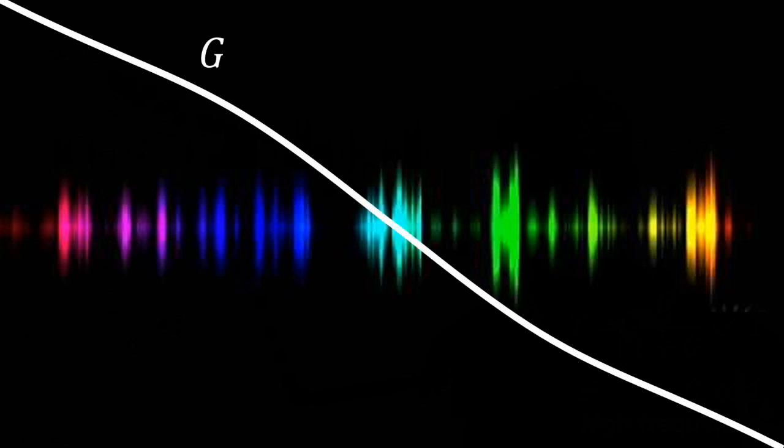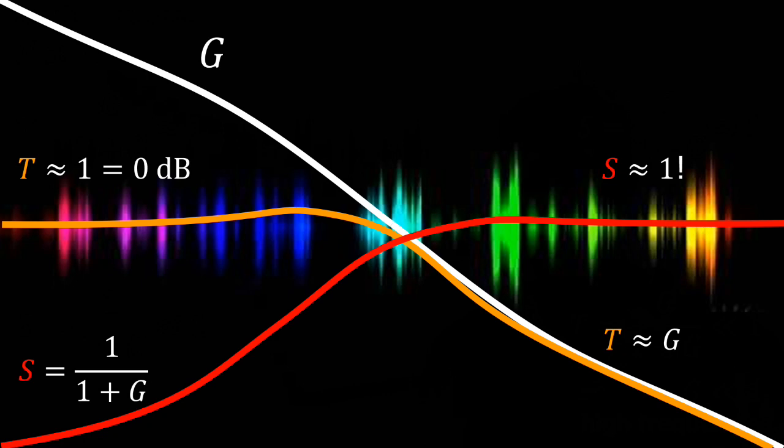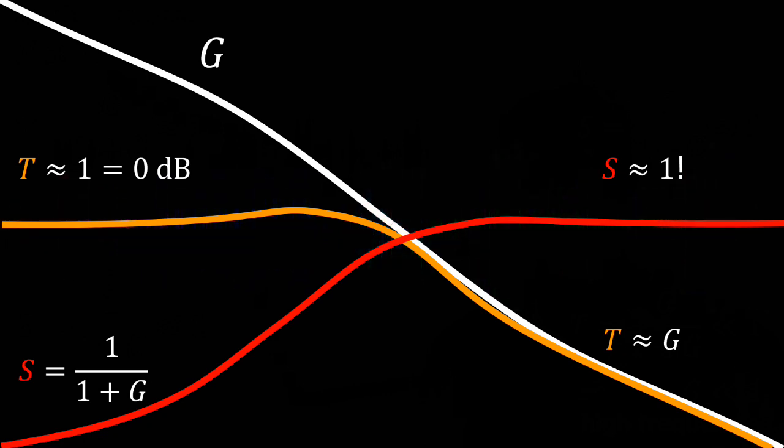The typical frequency behavior of G, T and S will go like depicted here. We have reference tracking and disturbance rejection at low frequencies, but the best we can do is to maximize the bandwidth where this is valid.